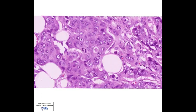At high power, we can look for the other two parameters of grading, namely nuclear pleomorphism and mitotic count. In this image, we see marked nuclear pleomorphism — the nuclei are of different sizes and shapes with prominent nucleoli. In the middle, there is a mitotic figure. The more mitotic figures seen, the higher the grade of the tumour.